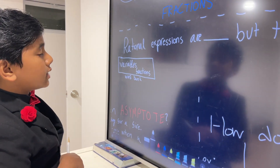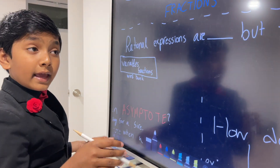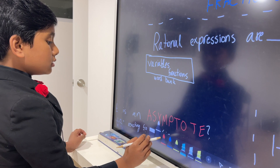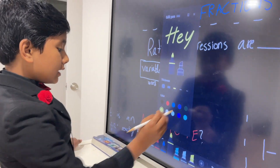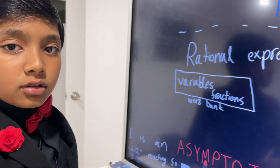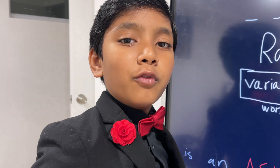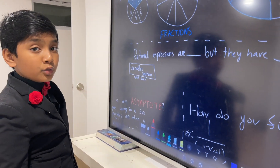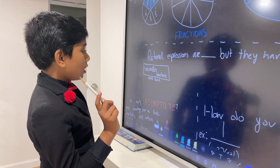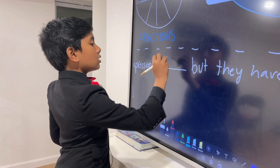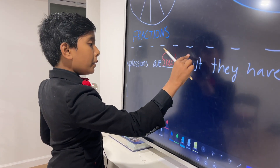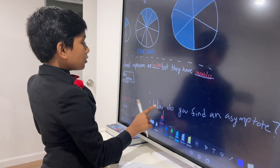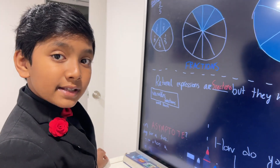What are rational expressions? Rational expressions are blank, but they have blank. So let's fill in the words — our word bank says only two words: variables and fractions. Rational expressions are just fractions, but they have variables. So rational expressions are fractions with variables on them.